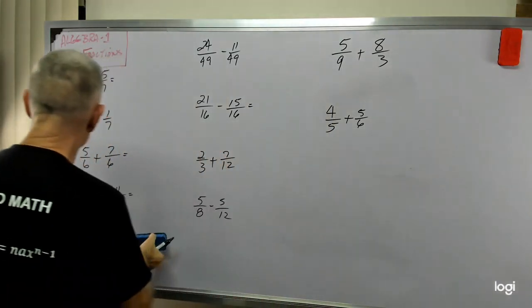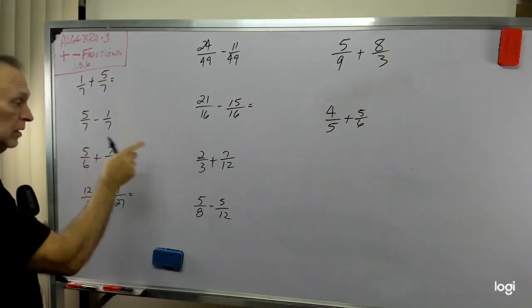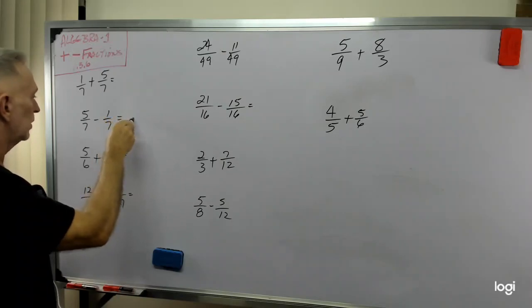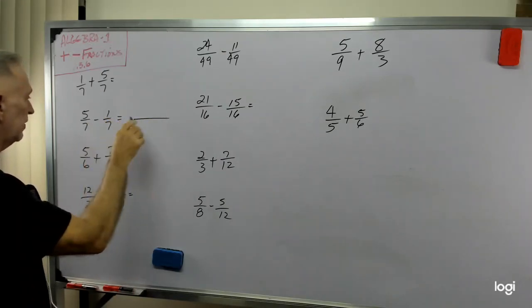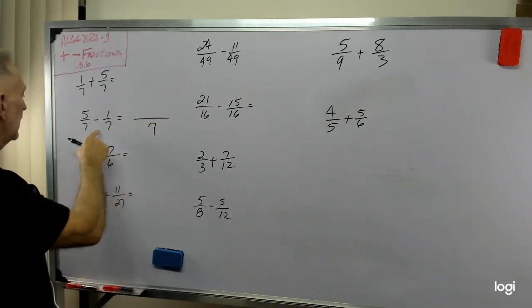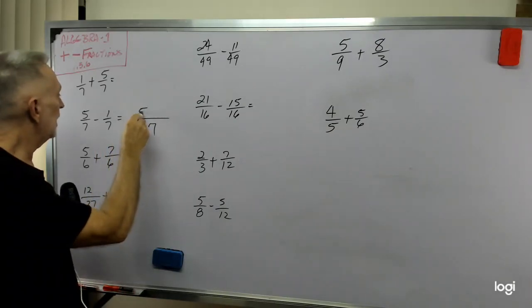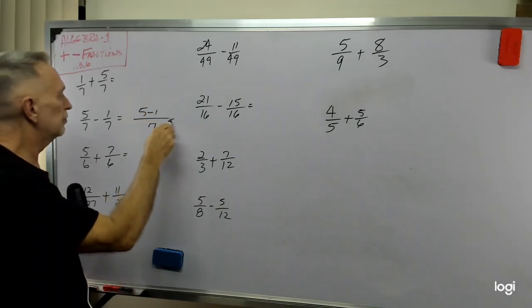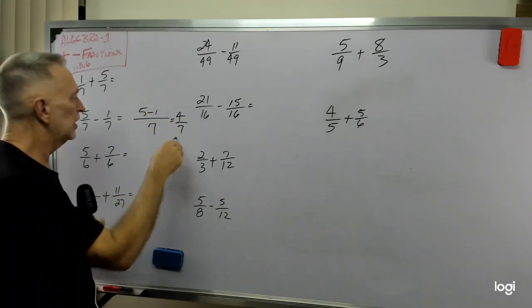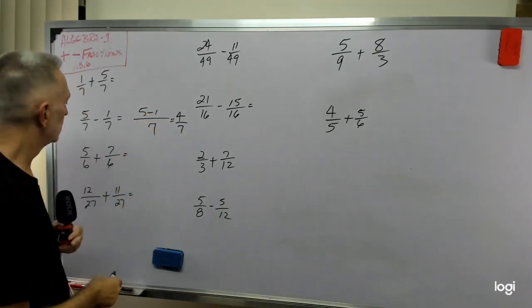What about this next one? Given what we just learned, we have a 7 underneath each of them. Now I have that common denominator. 5 minus 1, which is 4 over 7.